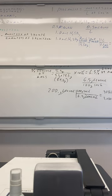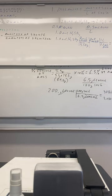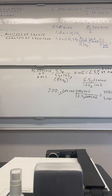Let's do another one. Say you have a solution that's 0.80 milligrams of acetaminophen — I'll write that as AC — per 80 milligrams of solution. And you have a 14-pound child. The dosing is something like one gram of acetaminophen per pound of body weight. How much of this solution do we need to administer to that child?